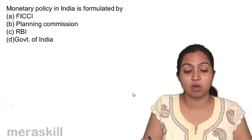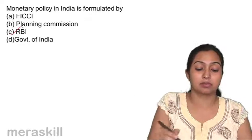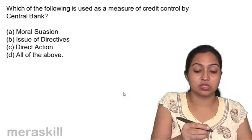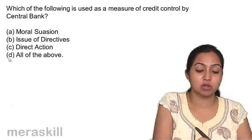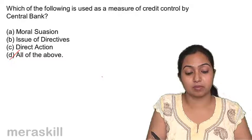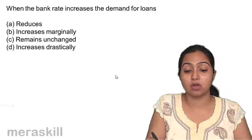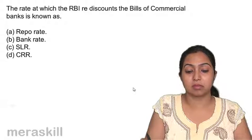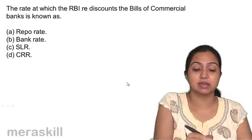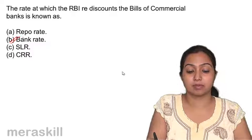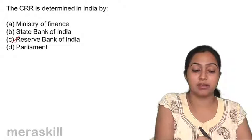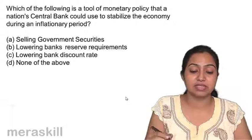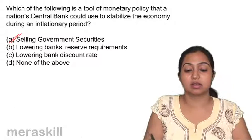Monetary policy in India is formulated by the RBI. Which of the following is used as a measure of credit control by RBI? Moral suasion, issue of directives, and direct action are all used. When bank rate increases, demand for loans decreases. The rate at which RBI rediscounts the bills is the bank rate. CRR is determined by the RBI.